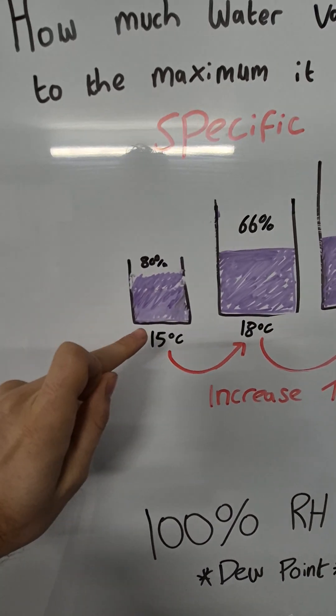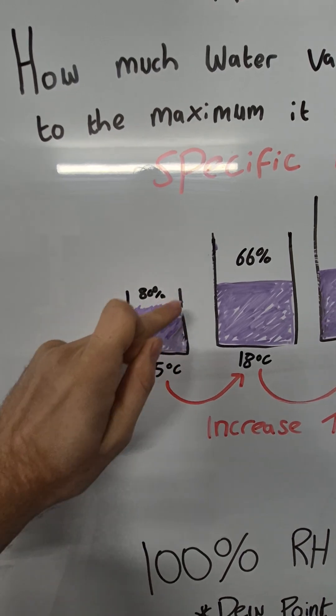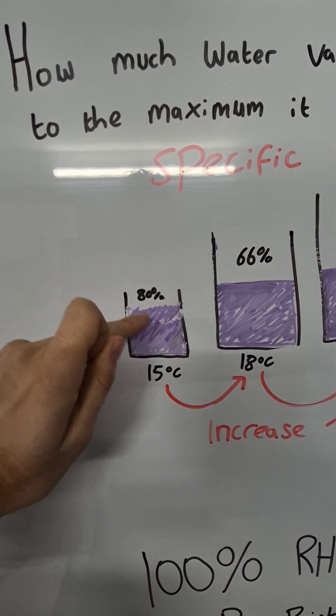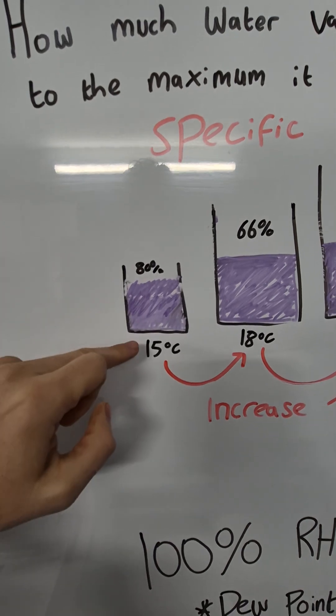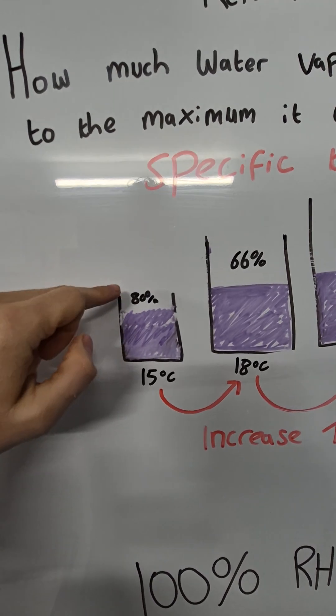So for example, at 15 degrees, you can see my bucket here, it's very easy to near enough overflow, that's 80%. If we decrease that temperature, chances are that's going to go higher and overflow.